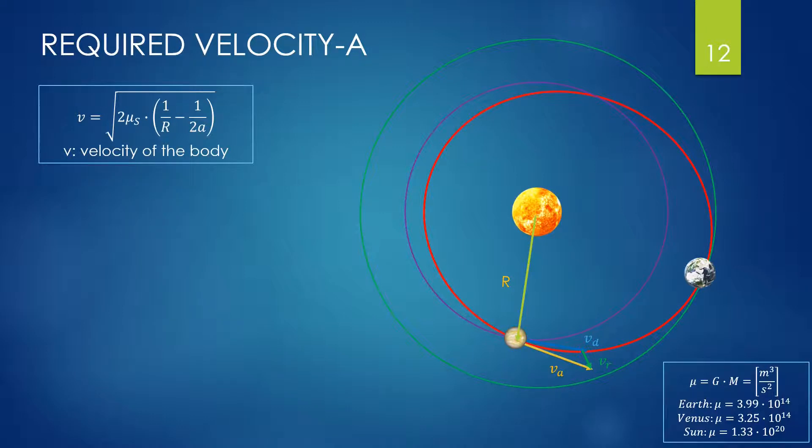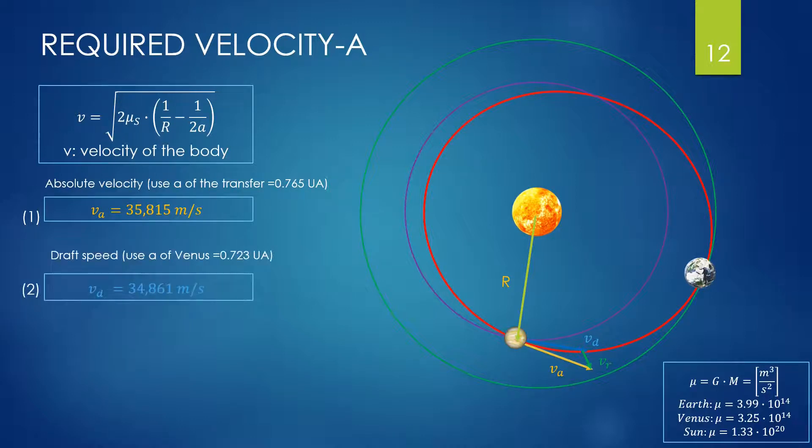Once the trajectory is known, the velocities are also. We need the ones in proximity of Venus now. We use always the same formula by changing R and A. Mu is the one of the Sun. The absolute velocity is calculated for R at Venus approach and for A at the elliptical transfer. The draft speed is calculated for the same R, but A is for the Venus orbit around the Sun. The relative speed is the difference as vector among the first two. For calculation we need also the angle, which equals this expression function of the parameters A, E, and R. So all are known. Eventually we found the velocity 11,000 meters per second more or less.